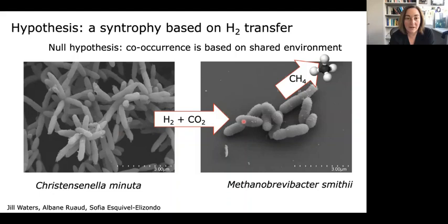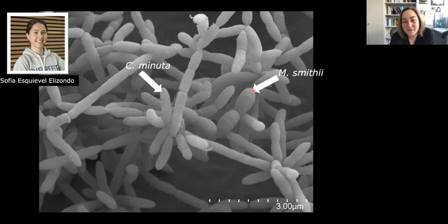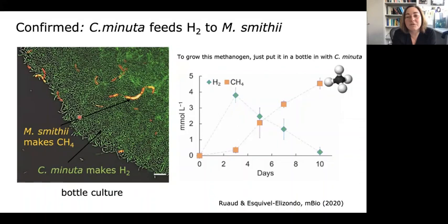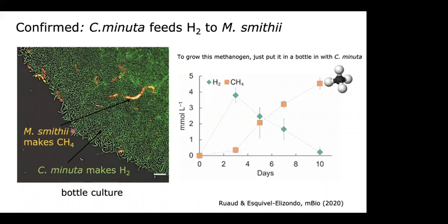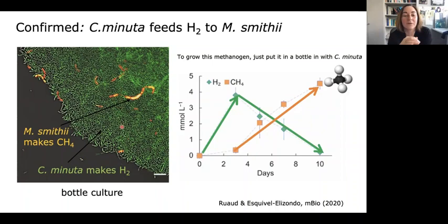We've been growing them in the lab. Semenuda forms really nice rosettes. When we add the methanogen, it nestles right in there — this is a close-up of a biofilm by SEM, where you can see the methanogens attached to the Christensenellas. This is work by Sophia Elizondo in the lab. When you throw Methanobrevibacter smithii in a bottle with Semenuda, it grows really well. You can see hydrogen first go up and then get drawn back down as methane increases, and biofilms visible by eye form with methanogens nestled in with the Christensenella.